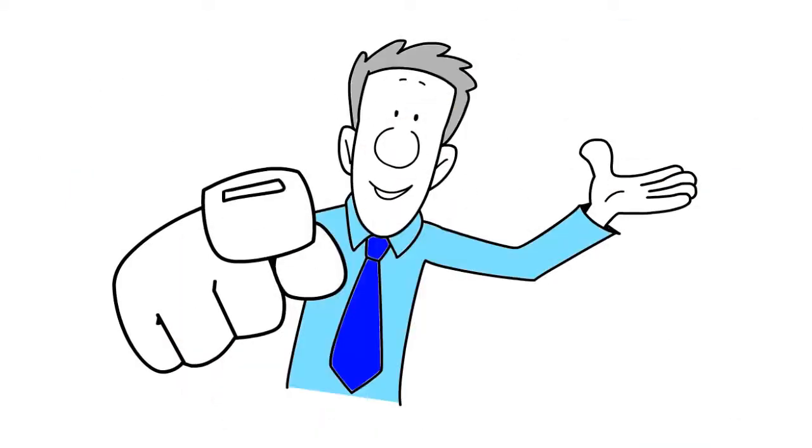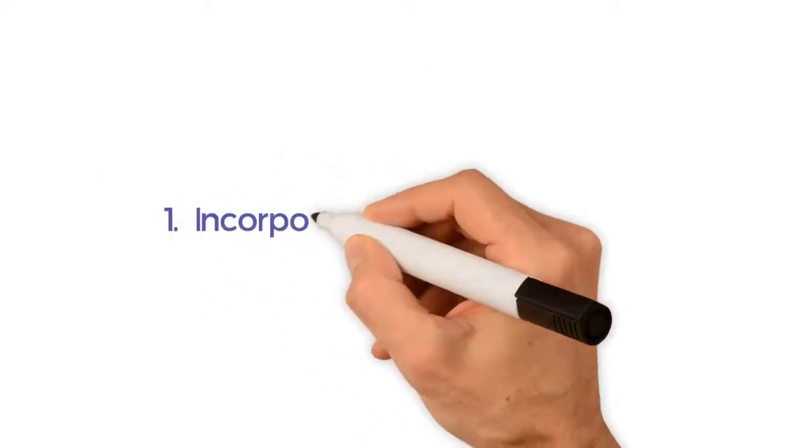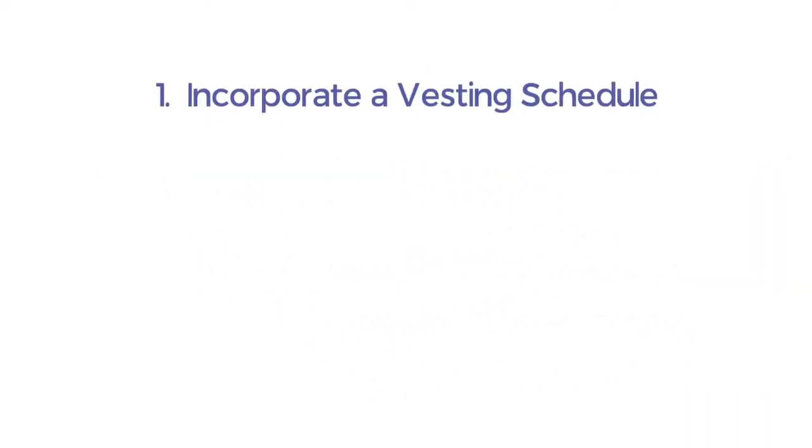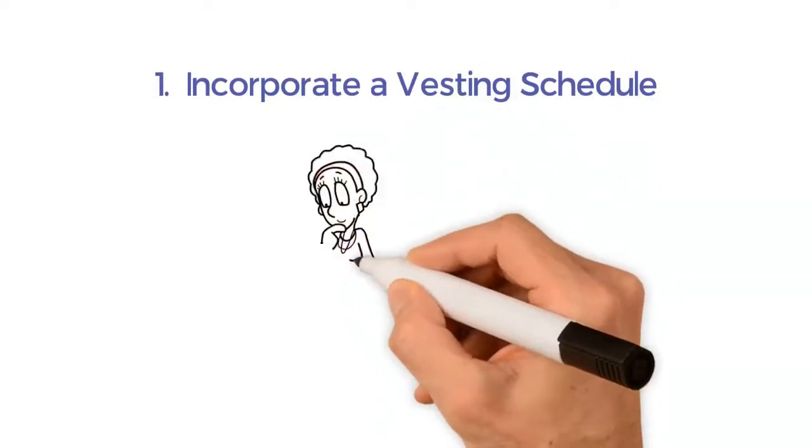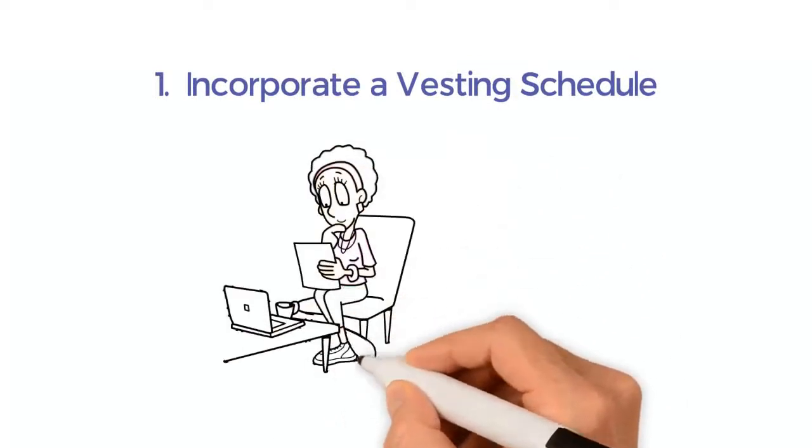This is what we think can help. One: Incorporate a Vesting Schedule. The vesting schedule essentially sets out the time and performance milestones that have to be met before X percentage of shares can vest.